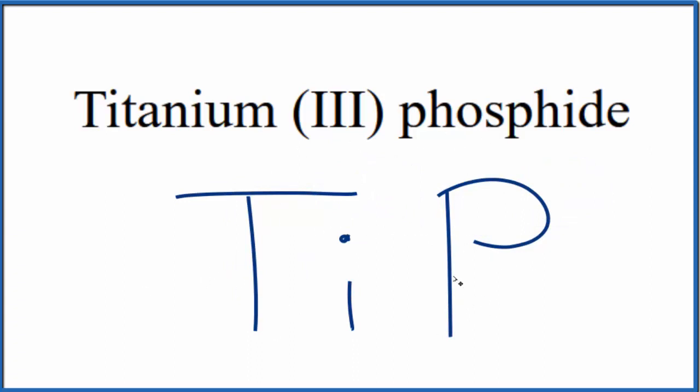If you were given the formula and asked to write the name, you know that phosphorus is always going to be 3 minus, form 3 minus ions. So the titanium has to be 3 plus, and that's why we write this Roman numeral three here in the name.